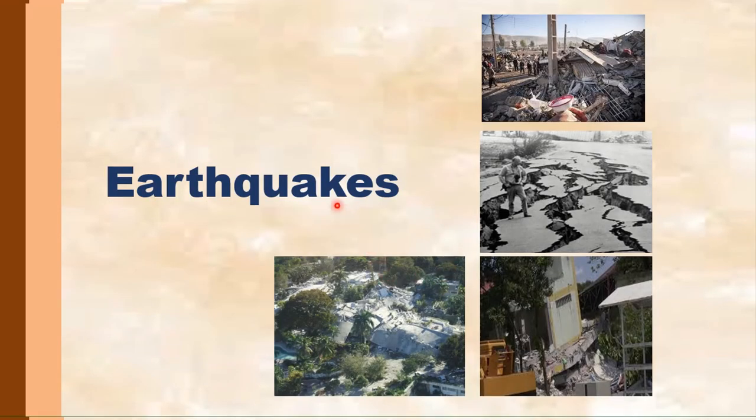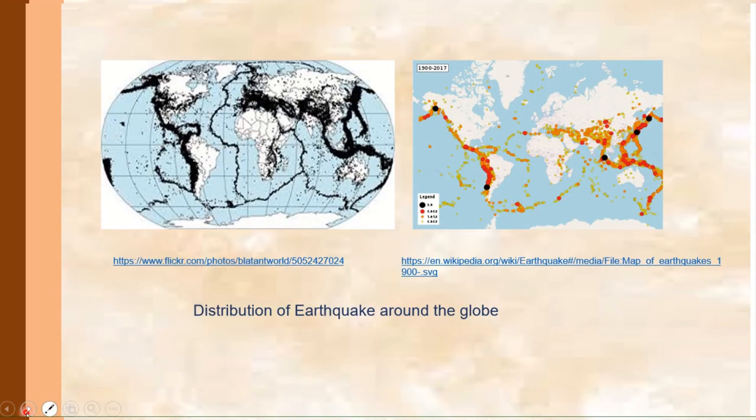Plate tectonics also result in the formation of earthquakes. Earthquakes may also occur in volcanic regions and are caused by both tectonic faults and by the movement of magma within the volcano. Such earthquakes can be an early warning result of volcanic eruption. We have here some of the effects of earthquakes, and the distribution of earthquakes around the globe.